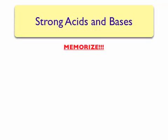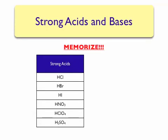Fortunately, there are only a short list of strong acids and bases. Since it is a short list, you are asked to memorize it. Any other acid or base that you encounter will be considered weak. The strong acids include hydrochloric acid, hydrobromic acid, hydroiodic acid, nitric acid, perchloric acid, and sulfuric acid.